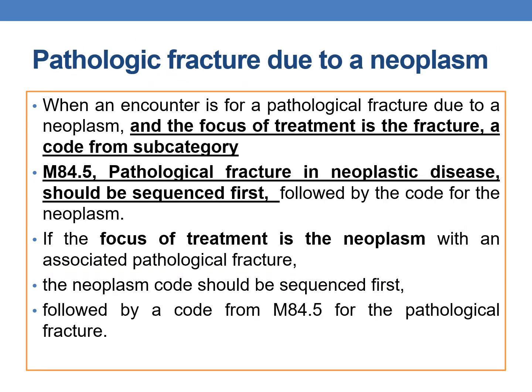Next guideline: pathological fracture due to neoplasm. There are two scenarios. First: when the encounter is for the pathological fracture due to neoplasm and the focus is on the treatment of the fracture, a code from subcategory M84.5 (pathological fracture in neoplastic disease) should be sequenced first, followed by the code for the neoplasm. Second: if the focus of treatment is the neoplasm with an associated pathological fracture, then the neoplasm should be coded first, followed by the code from M84.5 for the pathological fracture.